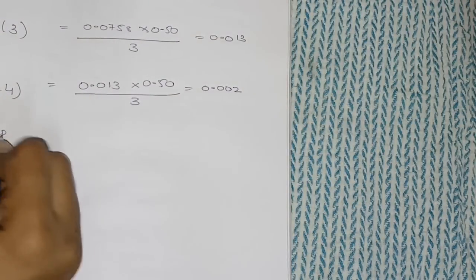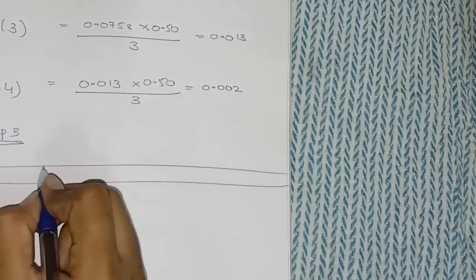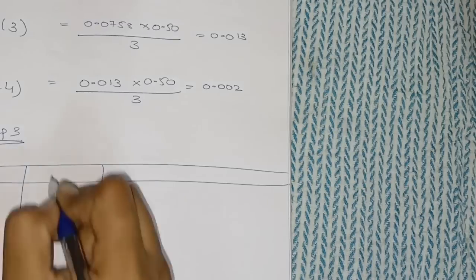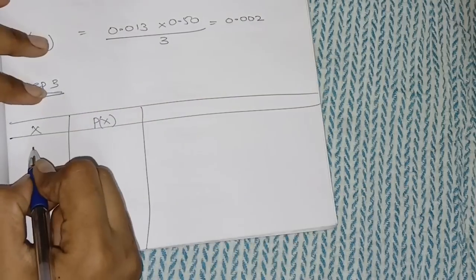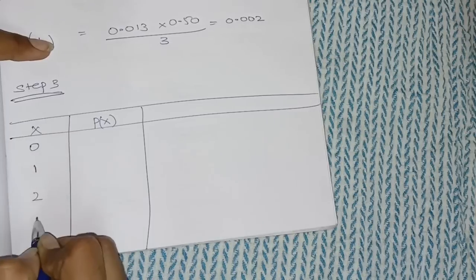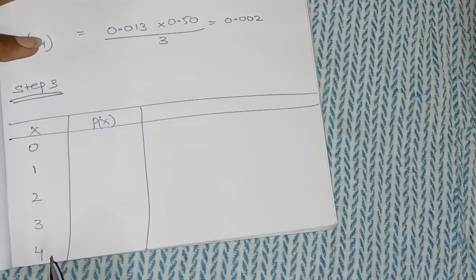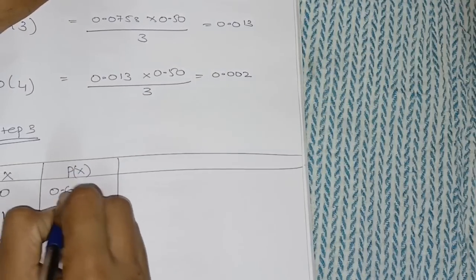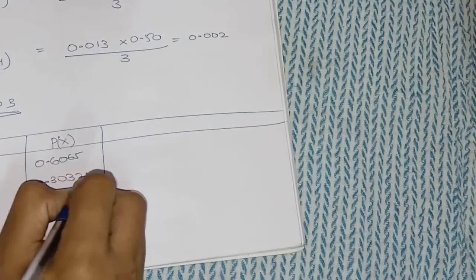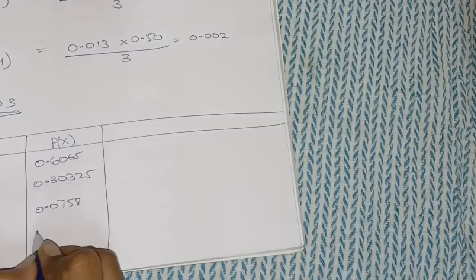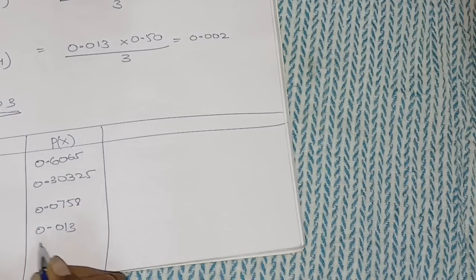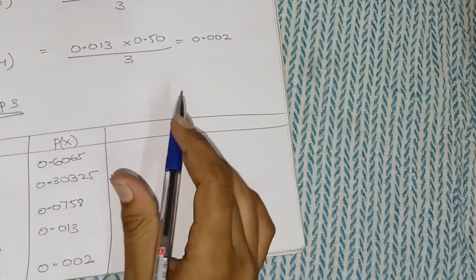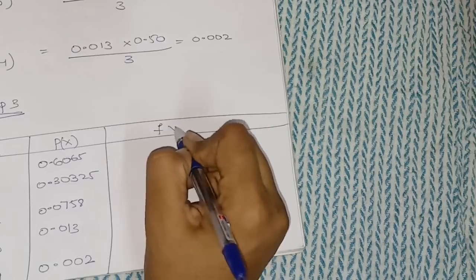The last step is Step 3, which is very crucial. Here you draw a table with x column, P(x) column, and f·P(x) column. x values are 0, 1, 2, 3, 4. The P(x) values we just calculated are: 0.6065, 0.30325, 0.0758, 0.013, 0.002.